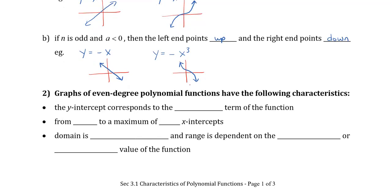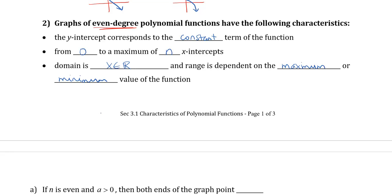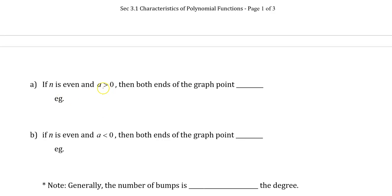Now let's look at graphs of even degree. They have the following characteristics: the y-intercept corresponds to the constant term. This time, there can be zero to a maximum of n x-intercepts. The domain is still all real numbers, but the range has changed — it's dependent on the maximum or minimum value. If the exponent is even and the coefficient is positive, then both ends of the graph point up. Think of the parabola y equals x squared, where both ends point up.